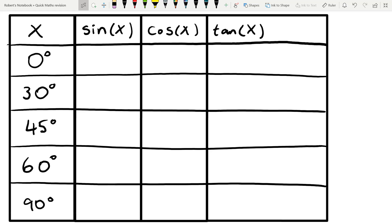So, the crux of this method is in the sine column, we do 0, 1, 2, 3, 4. So we number from 0 up to 4. Then what we do is we square root,